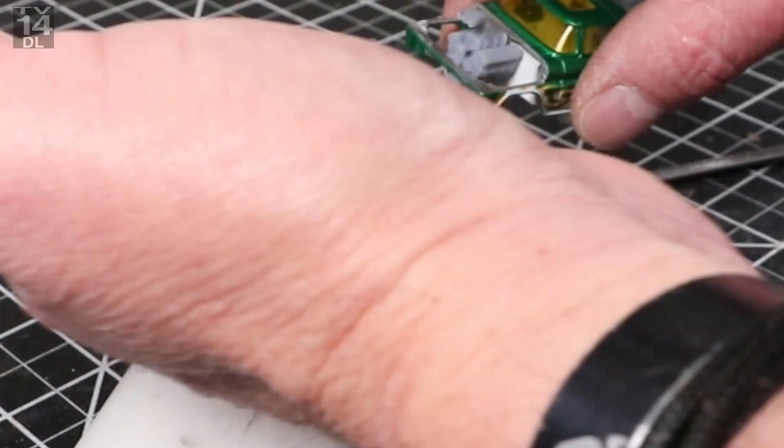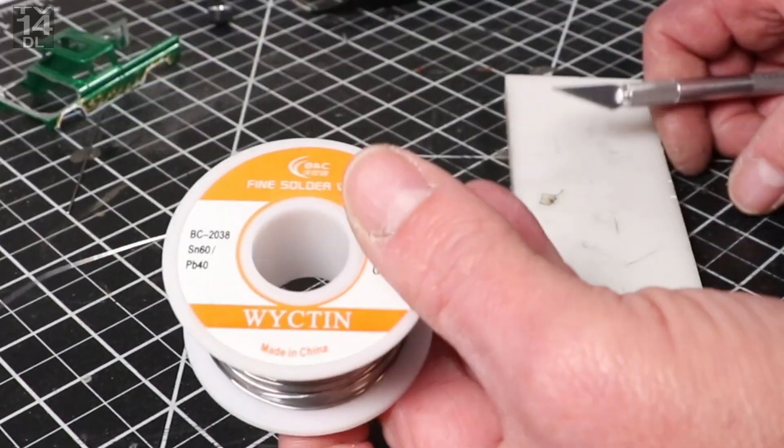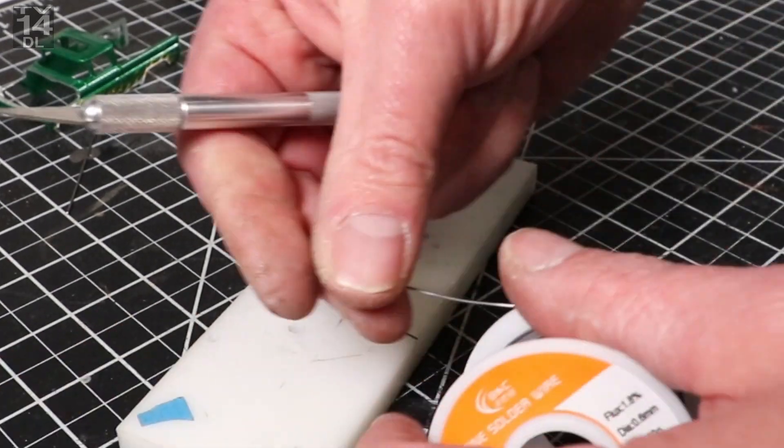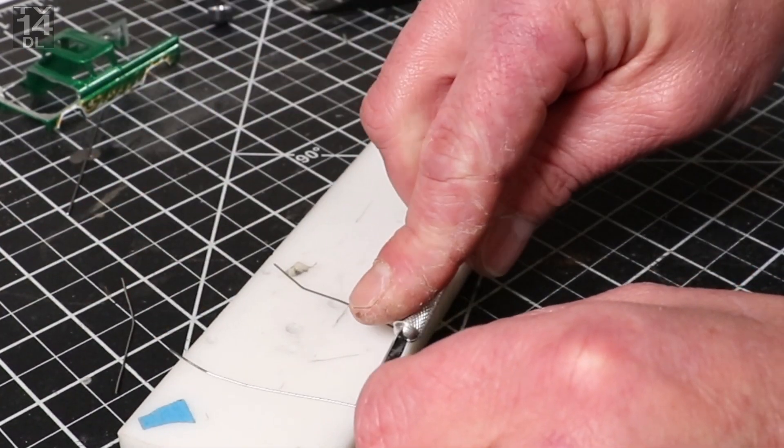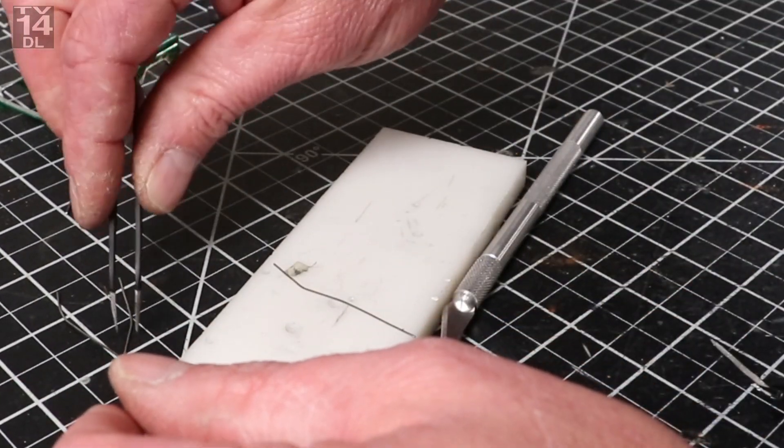So you can see right there how it all kind of came together. So if you notice, and I mentioned it in the last video, I did notch out and cut off the grill. What you see here is very thin solder. And what I'm going to do now is I'm making my exhaust.